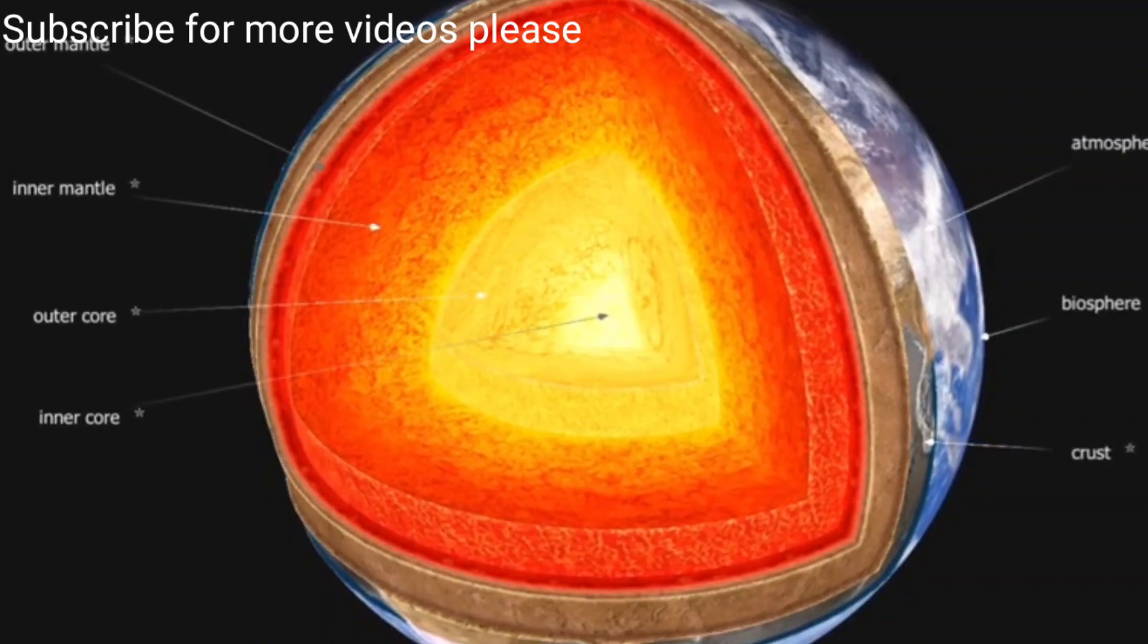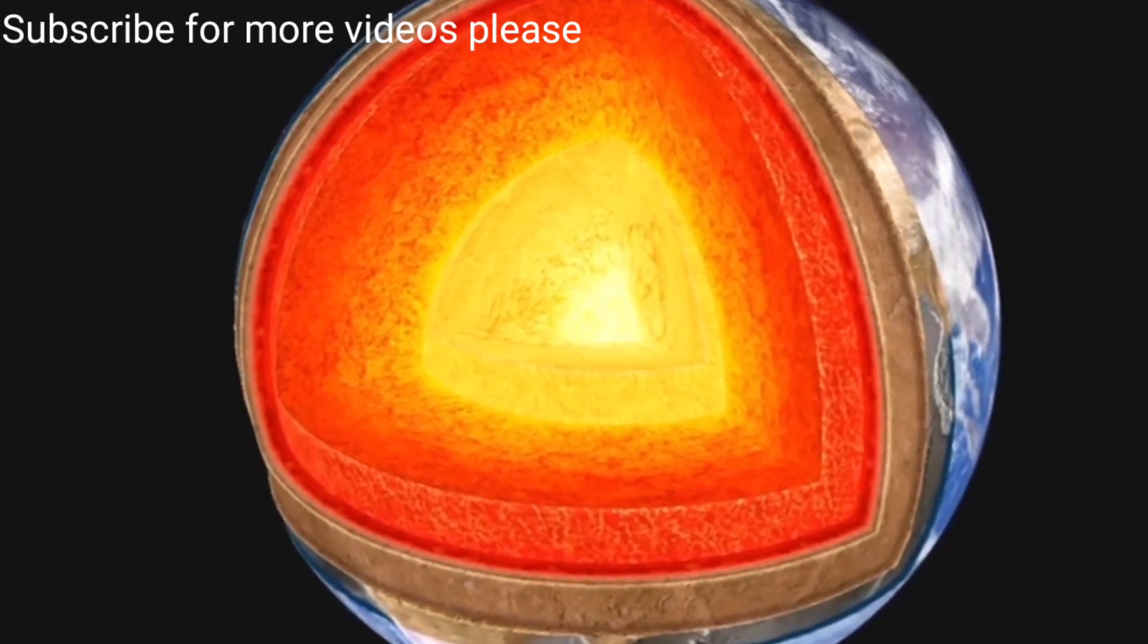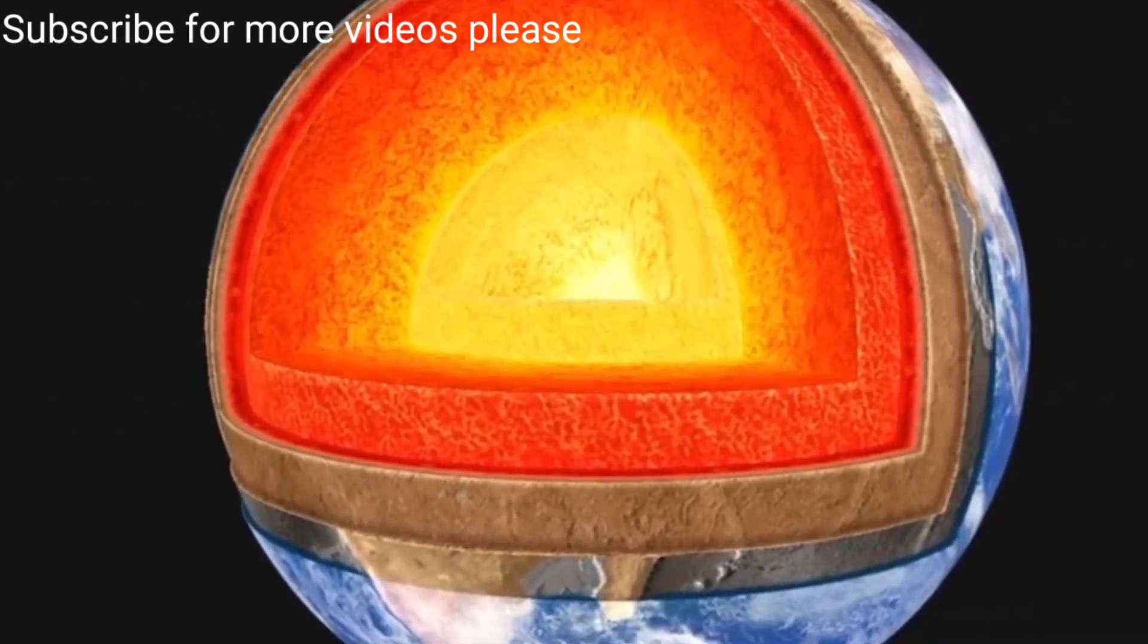As a result of the greenhouse effect, the average surface temperature is around 15 degrees Celsius. Without this effect, it would be 15 degrees below zero Celsius. The Earth's terrain varies greatly from place to place.